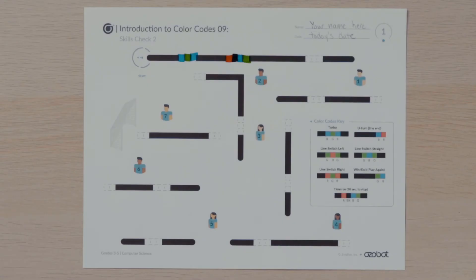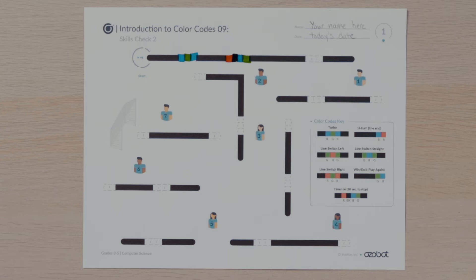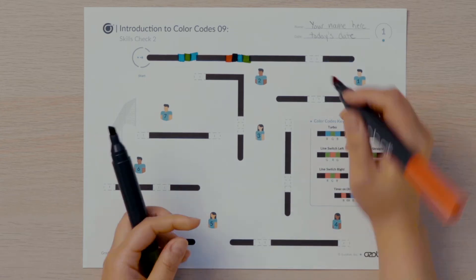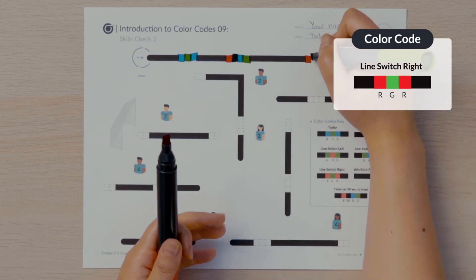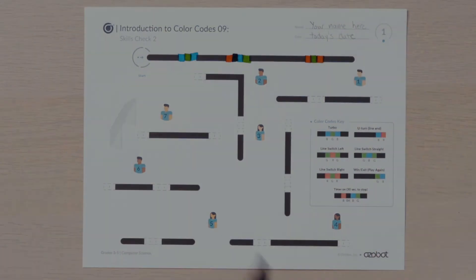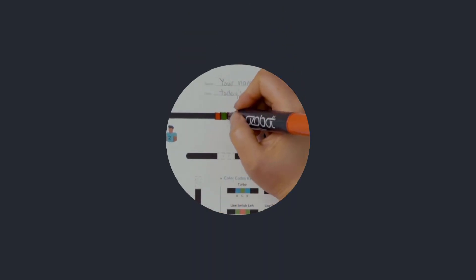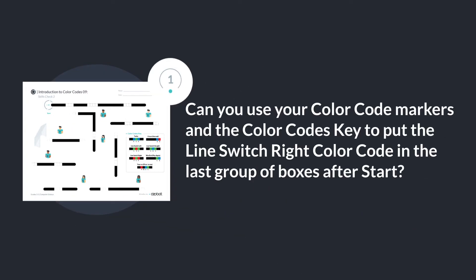After the timer starts, Ozobot will begin its route towards the goal. There are eight lines Ozobot needs to move on and off of to avoid the seven players on the other team and to reach the goal. The third missing color code on the line after start will program Ozobot to avoid player one and move to the next line. What direction does Ozobot need to move? Ozobot needs to turn right, so the missing color code is a line switch right. Can you use your color code markers and the color code's key to put the line switch right color code in the last group of boxes after start?